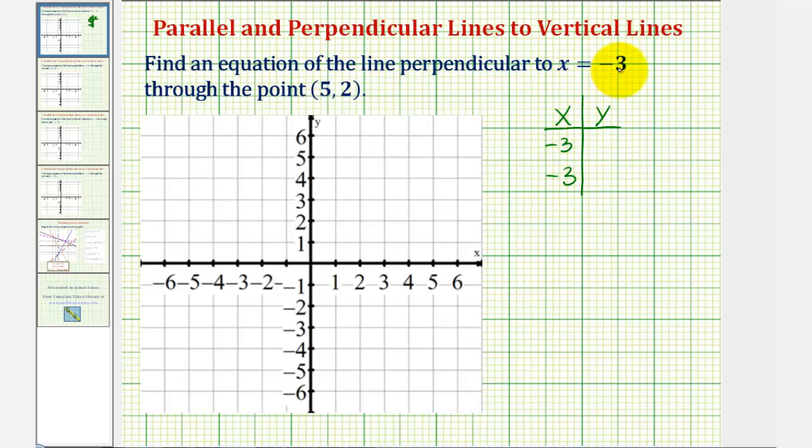But because the equation does not contain y, y can be anything, let's say zero and two. So if we plot these two points on the coordinate plane, here's negative three comma zero, and here's negative three comma two. Now we can see that x equals negative three is this vertical line here.